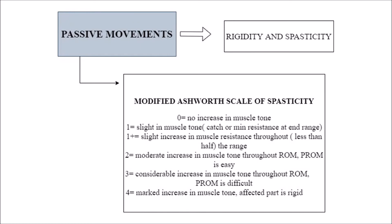Next is passive movement, which tells us about rigidity or spasticity. The difference is that rigidity is present throughout the range — from the start of motion it continues throughout. Spasticity is velocity dependent. For spasticity we use the Modified Ashworth Scale. If there is no increase in muscle tone and the patient completes the movement with normal resistance throughout the range, it is scored as 0.